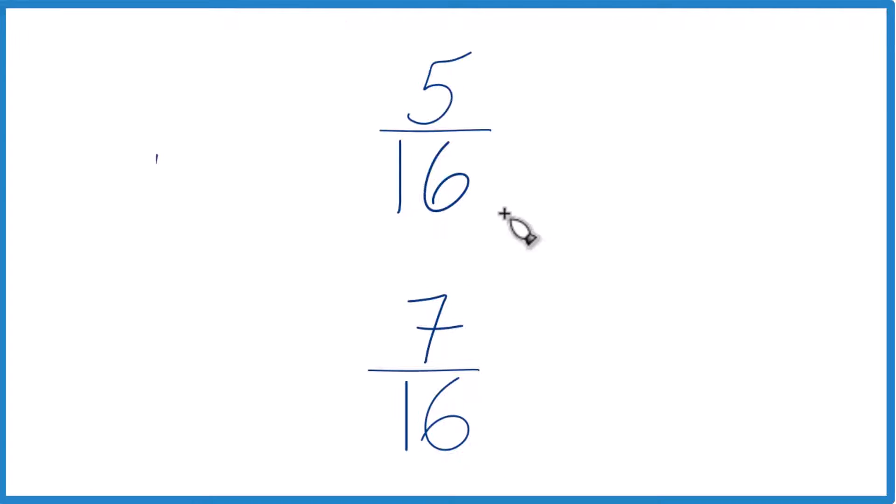The other way is to compare the numerators here. If we have the same denominator, we can just compare the numerators. 7 is greater than 5, so 7 sixteenths, that's greater than 5 sixteenths. It's greater than 5 sixteenths by 2 sixteenths, which you could simplify down to 1 eighth.